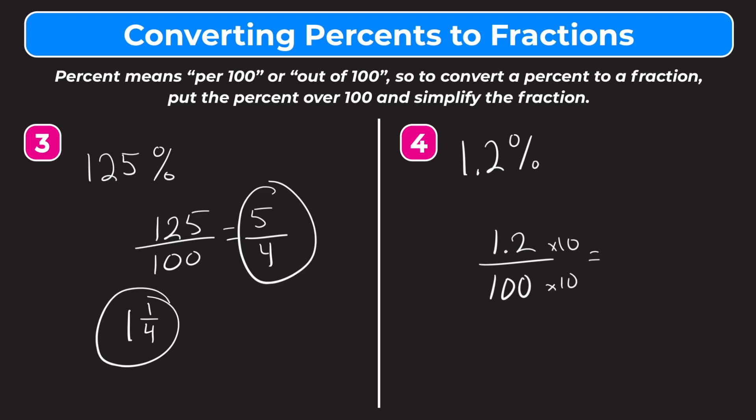And that is going to equal 12 on the top, because 1.2 times 10 moves the decimal to the right, over 1000 on the bottom because 100 times 10 is 1000. So now we have a cleaner fraction, 12/1000. We can live with that. And then our last step would be to simplify this fraction.